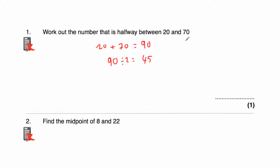So the number halfway between 20 and 70 is 45. Let's just check it: to get from 20 to 45 we add 25, and if we add another 25 to 45 we get 70. So 45 is the midpoint halfway between 20 and 70.